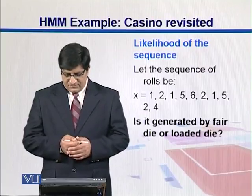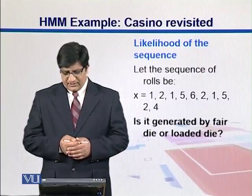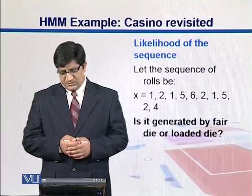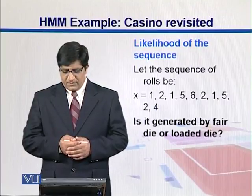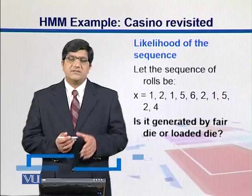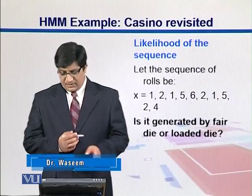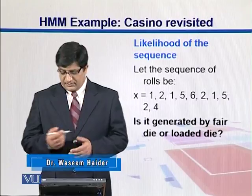So let's have a sequence of rolls and that is equal to x = 1, 2, 1, 5, 6, 2, 1, 5, 2, 4. And for the whole sequence we are interested in whether it's coming from a fair die or it's coming from a loaded die.